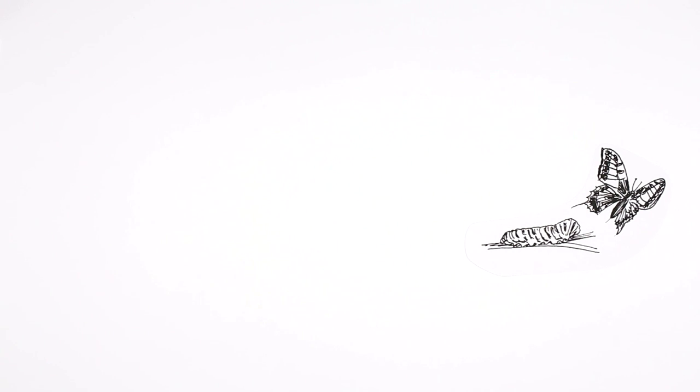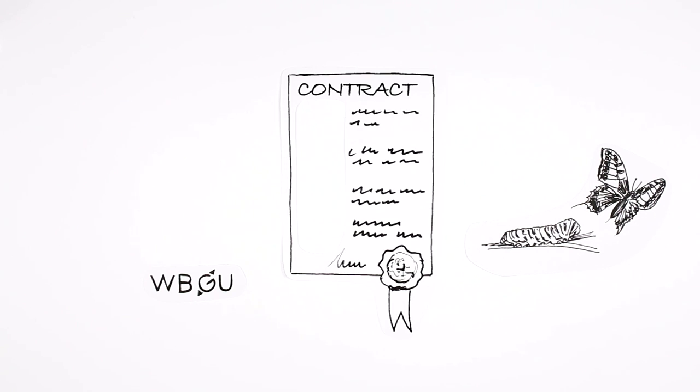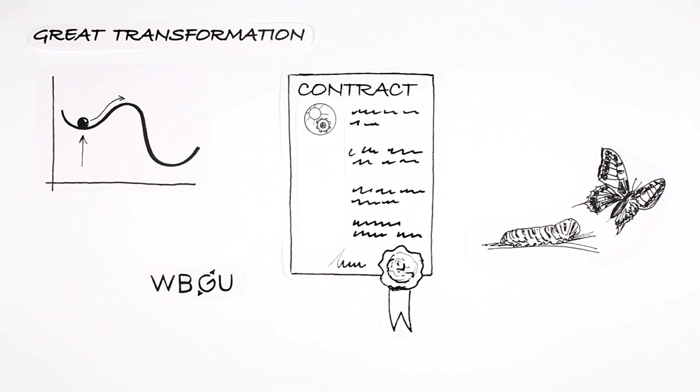The German Advisory Council on Global Change, the WBGU, has come up with a plan. It proposes a new social contract for what it calls a great transformation into a sustainable society. This transformation would involve significant technological improvements, new welfare concepts, multifaceted social innovations, and an unprecedented level of international cooperation.